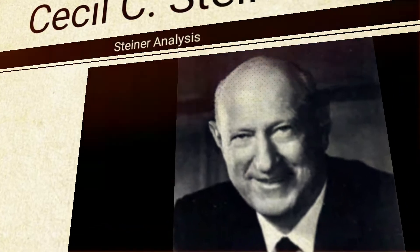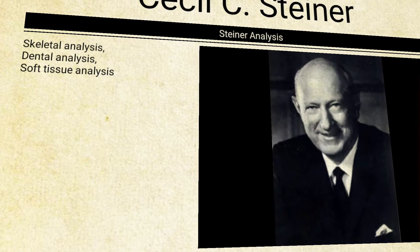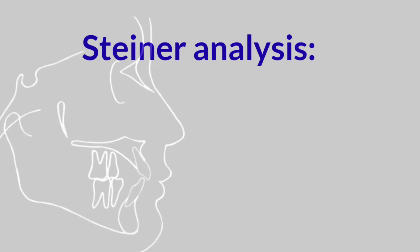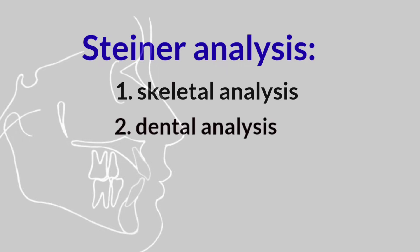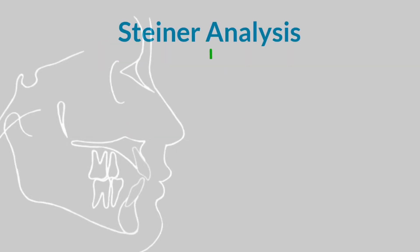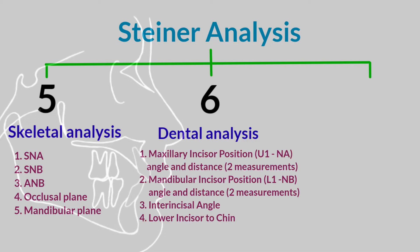Cecil C. Steiner developed a form of cephalometric analysis presented in 1953. Steiner analysis consists of three parts: skeletal, dental, and soft tissue. There are five references of skeletal, six of dental, and one soft tissue.